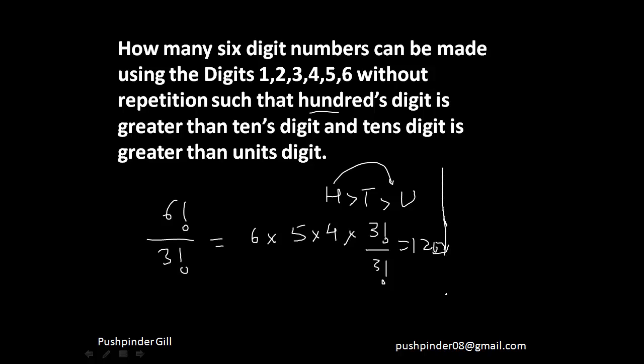For example, if I ask you: using digits 1, 2, 3, 4, 5, in how many ways can you form 5-digit numbers such that the tens digit has to be greater than the hundreds digit? It's simply 5 factorial divided by 2 factorial — the total number of ways divided by the number of ways those 2 identical things can arrange themselves. This gives a straightforward and easy answer.